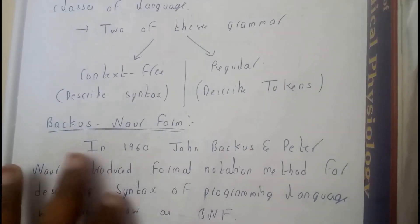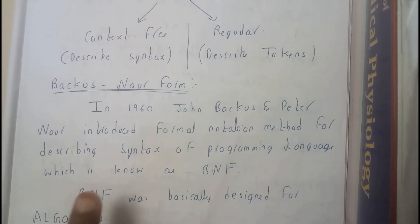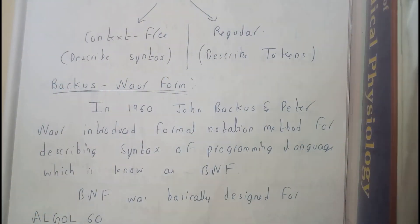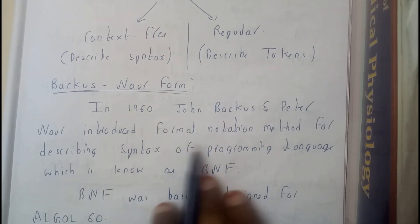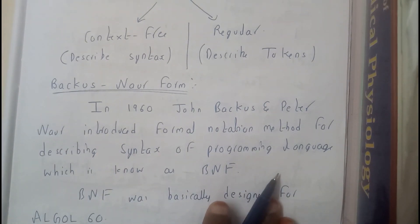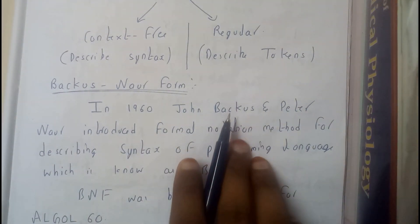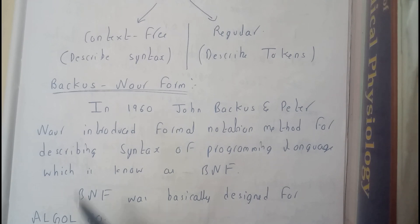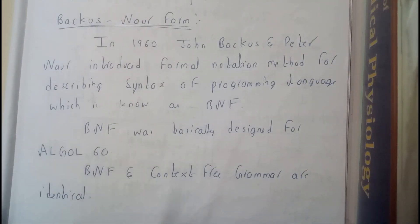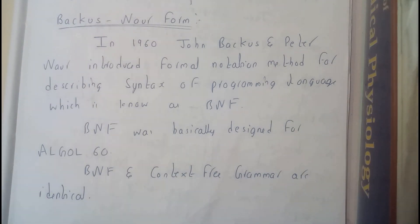Now let us go through BNF, that is Backus-Naur Form. This was invented by two scientists and its main use is to justify whether syntaxes are proper or not. In the 1960s, John Backus and Peter Naur introduced the formal notation method for describing syntaxes for a programming language, popularly known as BNF. This was basically designed for ALGOL 60, the first language with BNF. BNF and context-free grammar are almost identical.